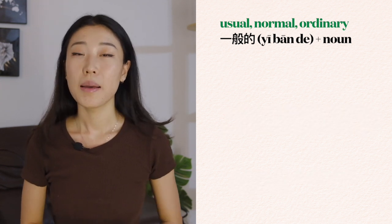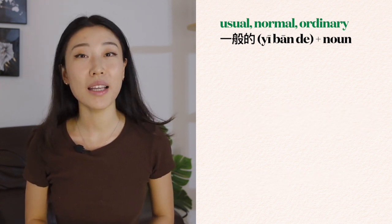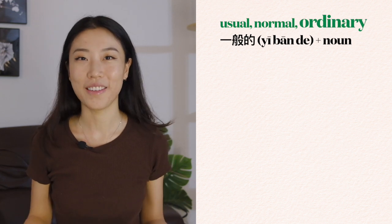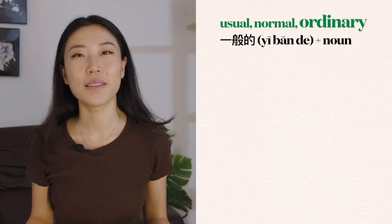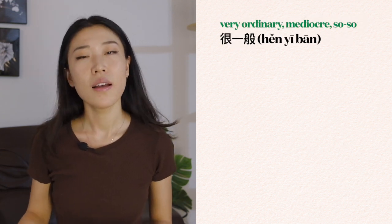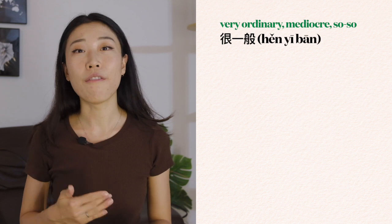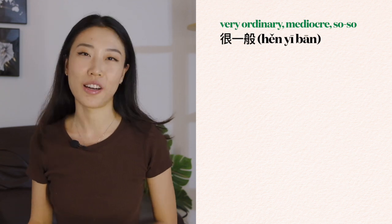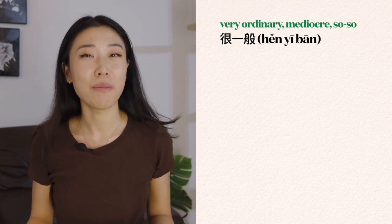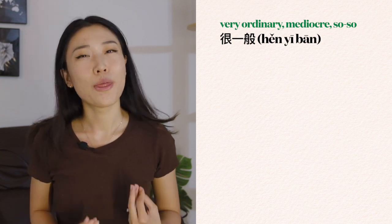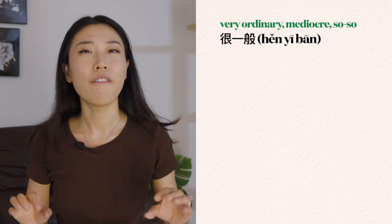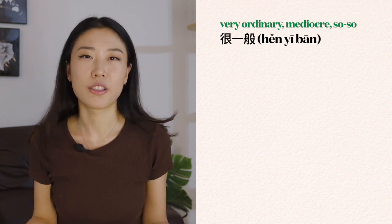Because 一般 also has the meaning of 'ordinary', we can also say 很一般 — something is very ordinary. In other words, very mediocre, nothing outstanding about it, very much so-so.